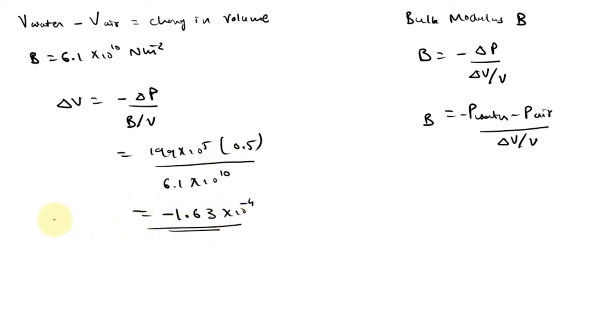So this is delta V. That means V for water to change, V for air, that is minus 1.63 into 10 raise to minus 4. So this is the change in the volume. Thank you.